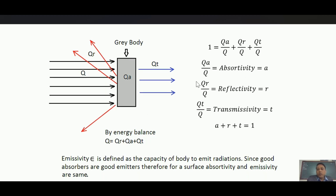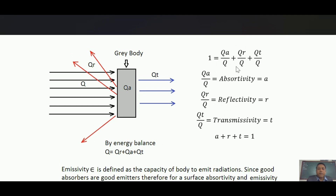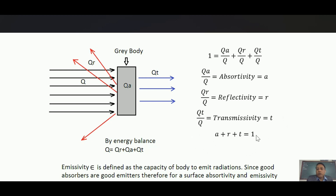If we perform the energy balance, then Q must be equal to Qr plus Qa plus Qt, since all three are derived from this energy. Dividing both sides by Q, the LHS gives one and the RHS gives Qa/Q, Qr/Q, and Qt/Q all added. Qa/Q is the amount of radiation absorbed relative to radiation falling — it is called absorptivity A. Similarly, Qr/Q is called reflectivity R, and Qt/Q is transmissivity T. So A plus R plus T equals 1.